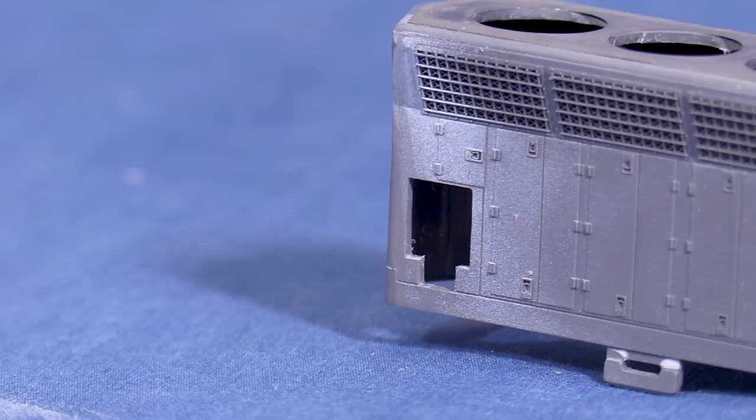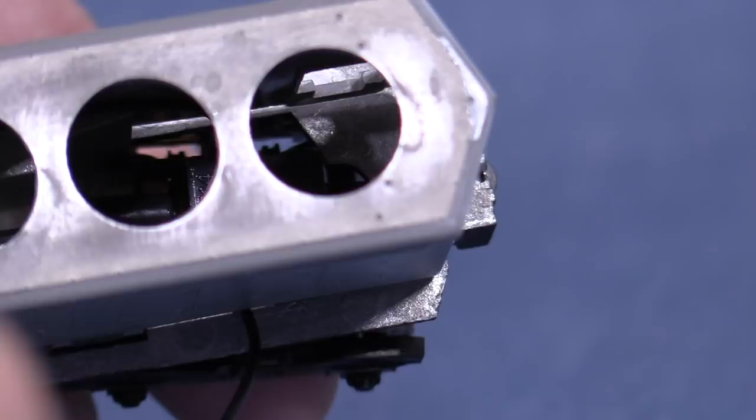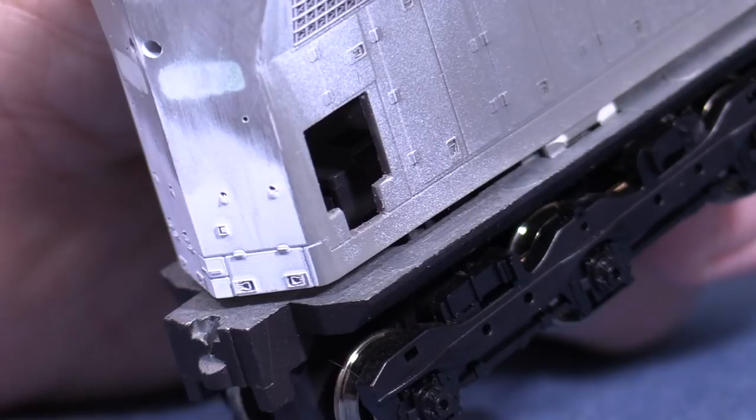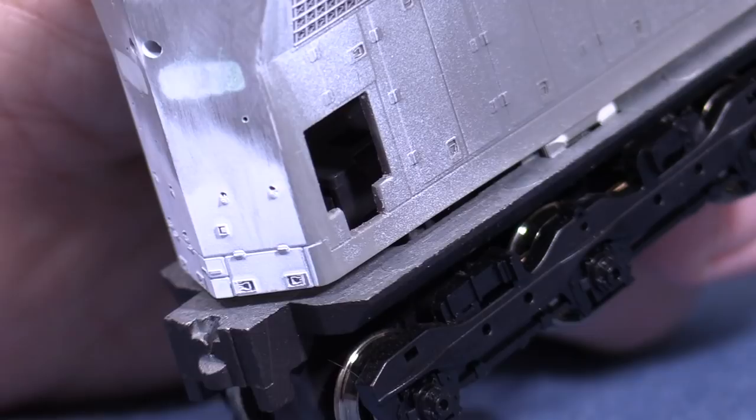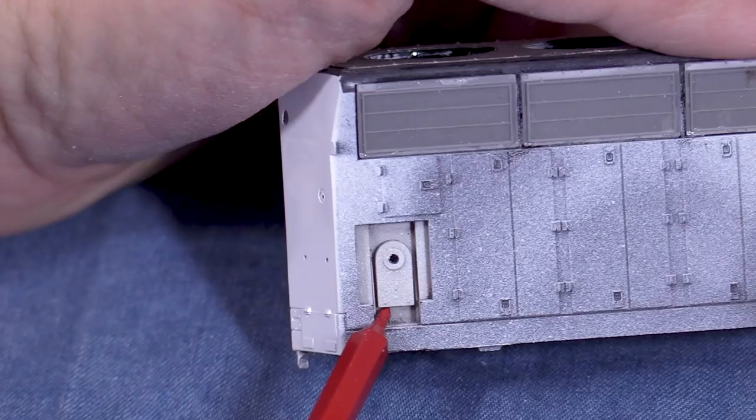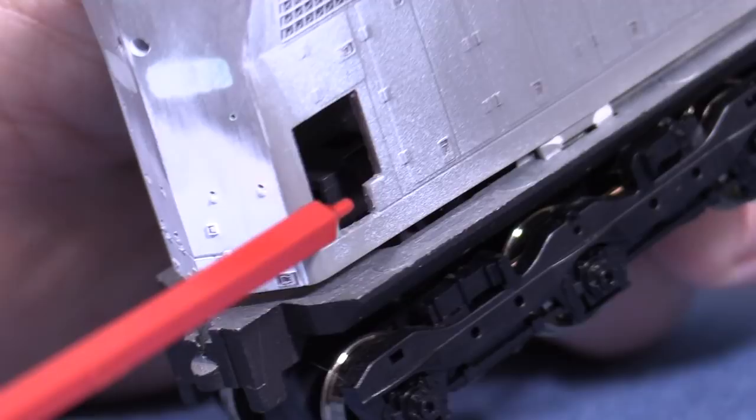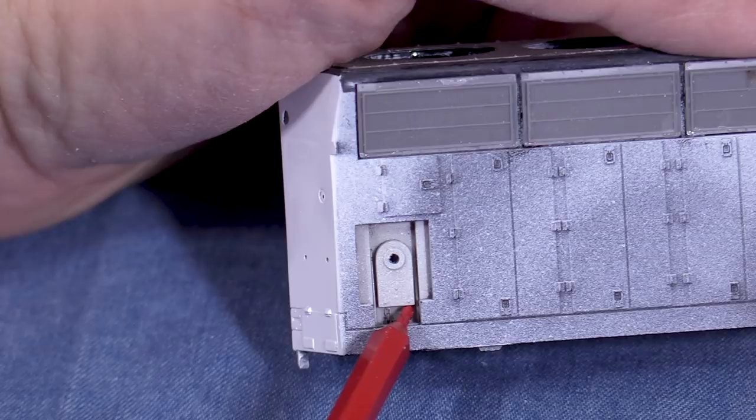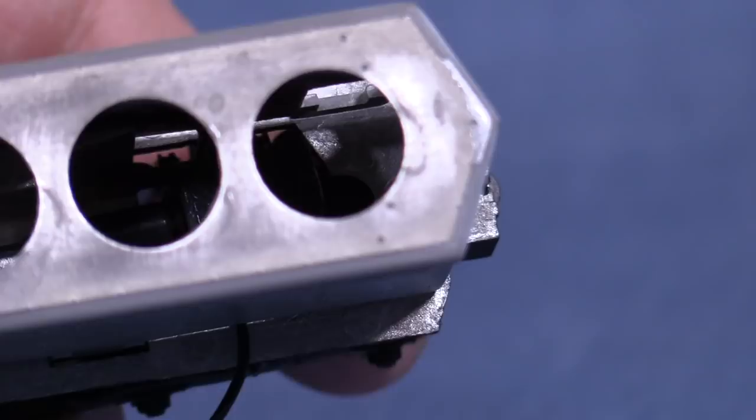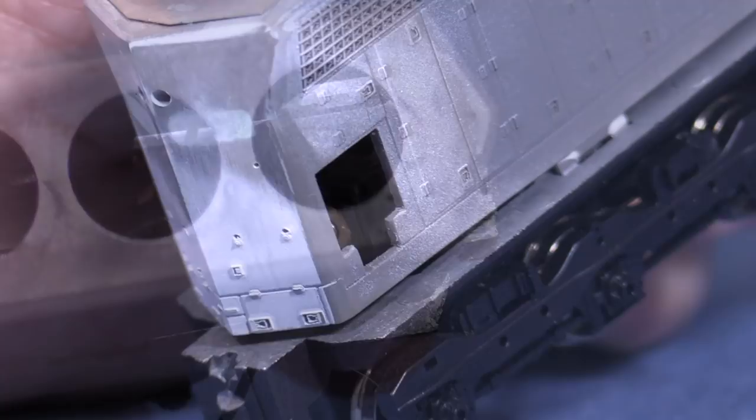Before I start building the new brake wheel recess, I need to check clearances. I've put the shell back on the chassis temporarily. I'm looking at how much room I have between the brake wheel area and the gear tower on the rear truck as the truck swings. It looks like I'll have to make sure that whatever I do doesn't project more than about 40 thousandths beyond the edge of the opening that I cut. What I want to do is approximate what's on the Proto 2000 shell while making sure that the new parts don't interfere with the operation of the rear truck. For me, this is one of those areas where operation takes precedence over looks, and it's important that the rear truck can swing freely.